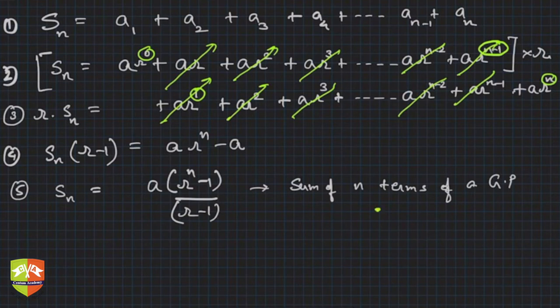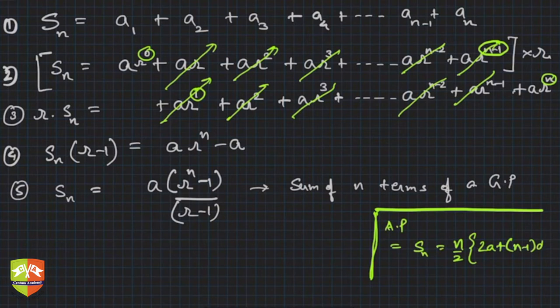In case of AP if you recollect, what was in the case of AP? Sum of n terms was nothing but Sn = n/2(2a + (n-1)d). Here Sn is a(r^n - 1)/(r-1). Is this sum clear?